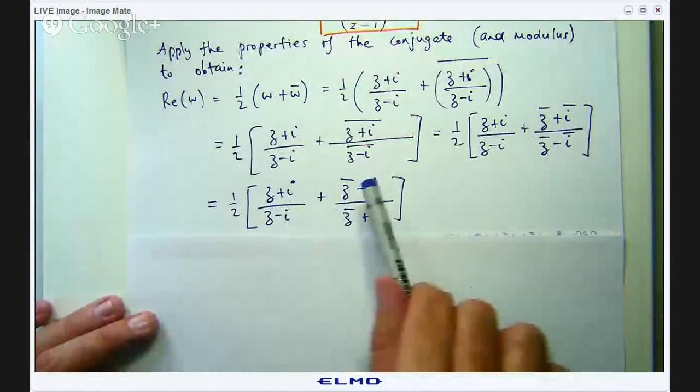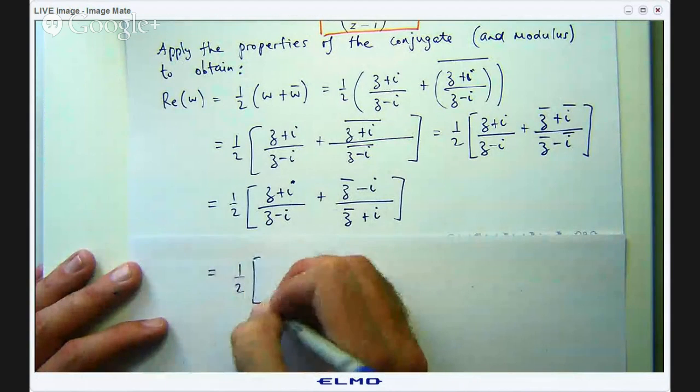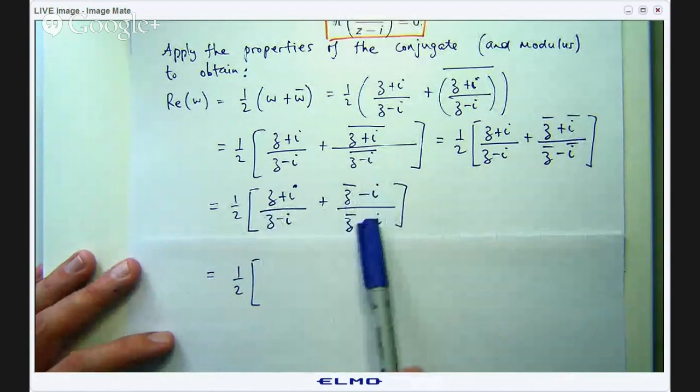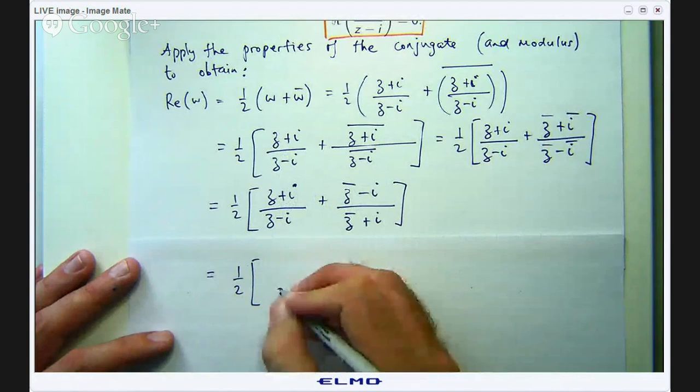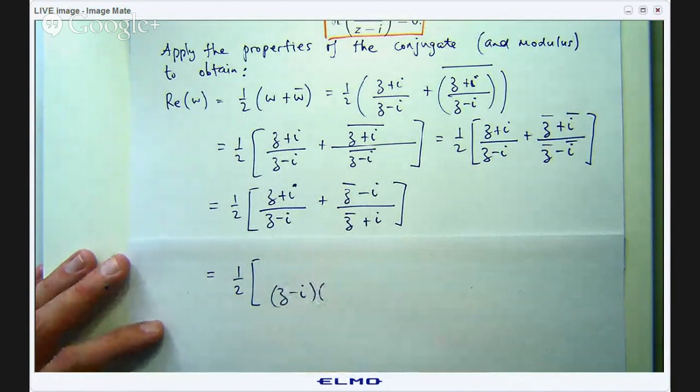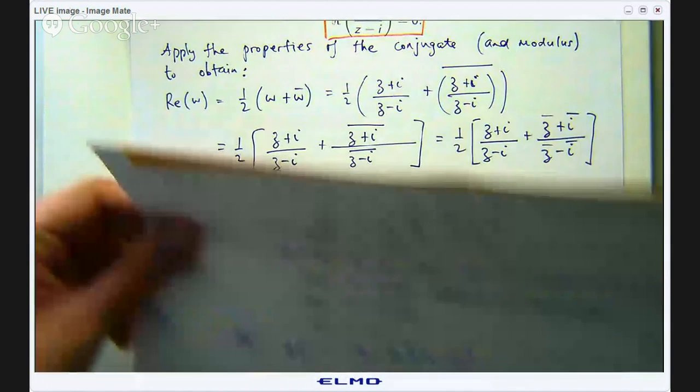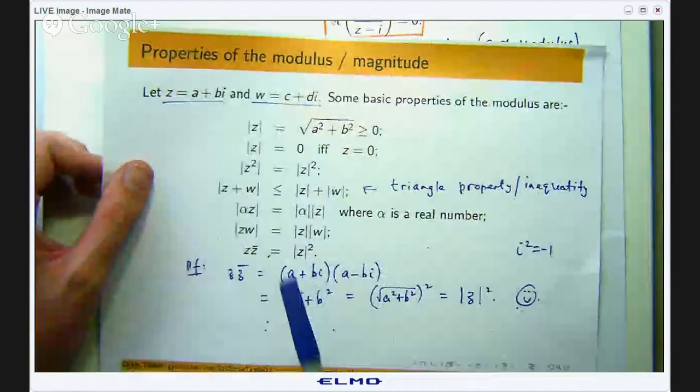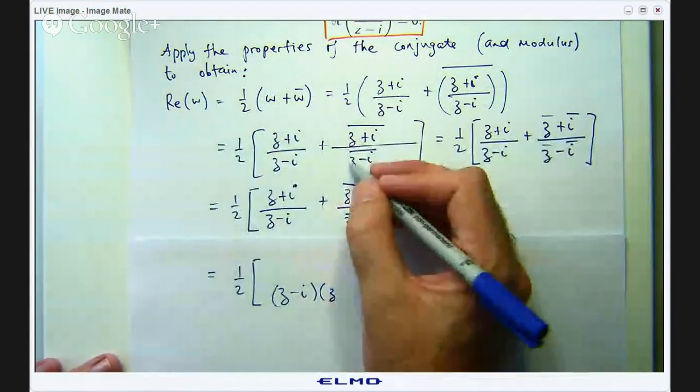So what I am going to do is cross multiply here. Now in the denominator this is going to multiply with this, but actually I am going to put this back in this term because then I am multiplying something with its conjugate, and I know from that previous slide that the complex number times its conjugate is always a real number.